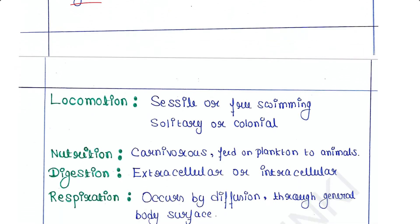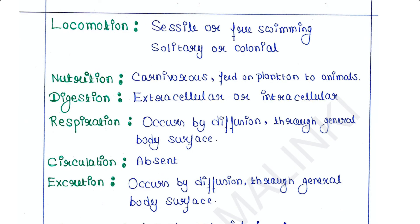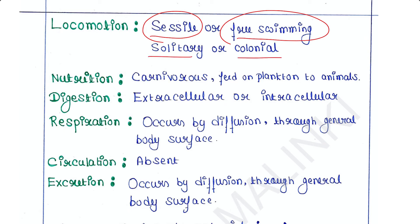Locomotion: they are either sessile, meaning they are fixed and cannot move, or sometimes some of them are free-swimming, so they can swim freely. They are either solitary or colonial.